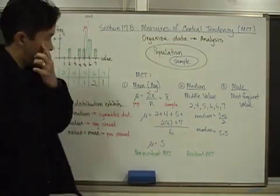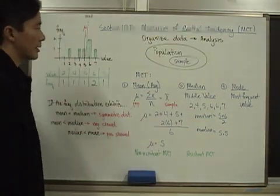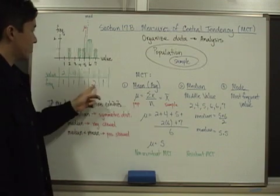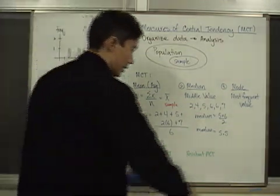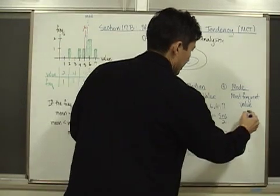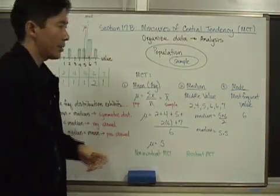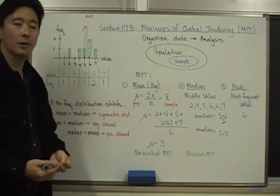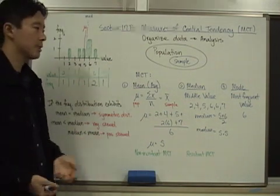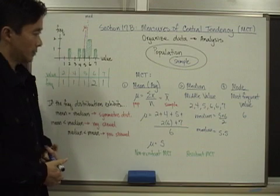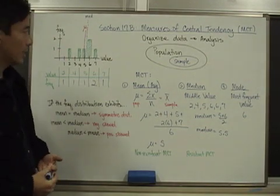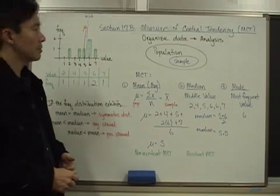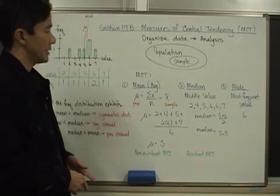Looking at the mode for this data set — the most frequently occurring value is 6, because it occurs twice. So the mode is 6. You can have more than one mode: if there are two modes it's called bimodal, and three modes is trimodal. These are the three measures of central tendency you can use to analyze your data.